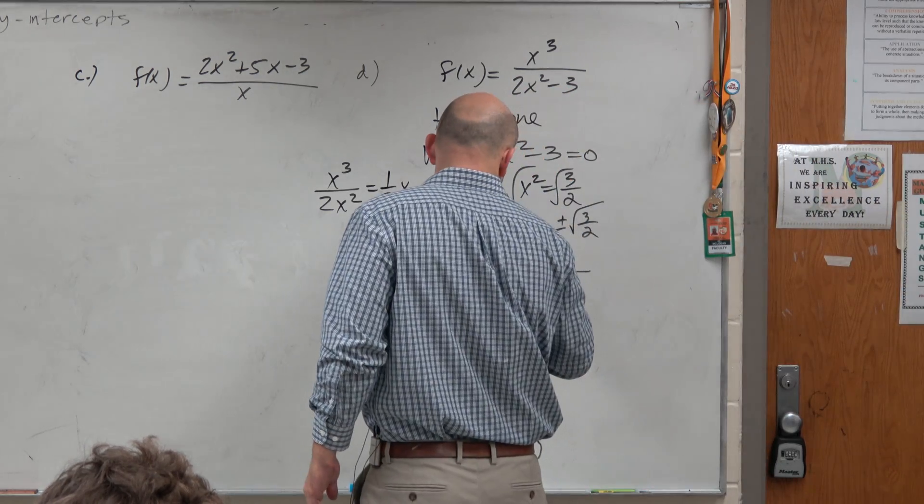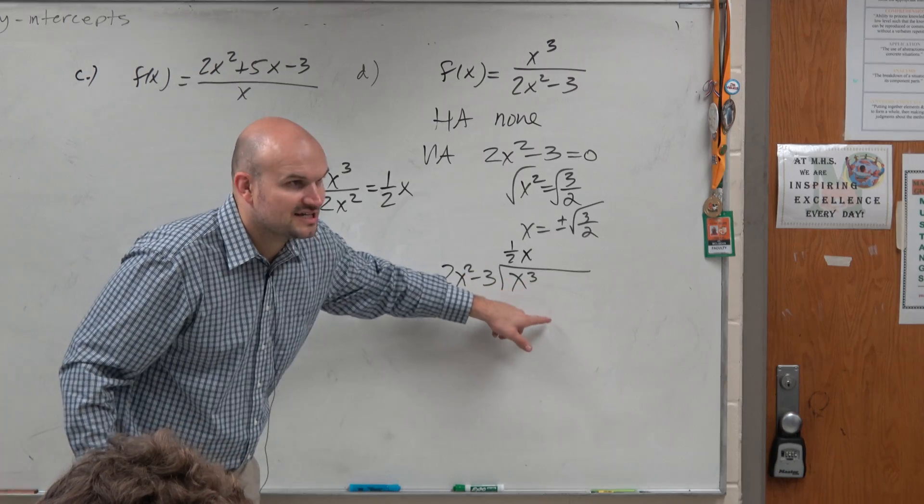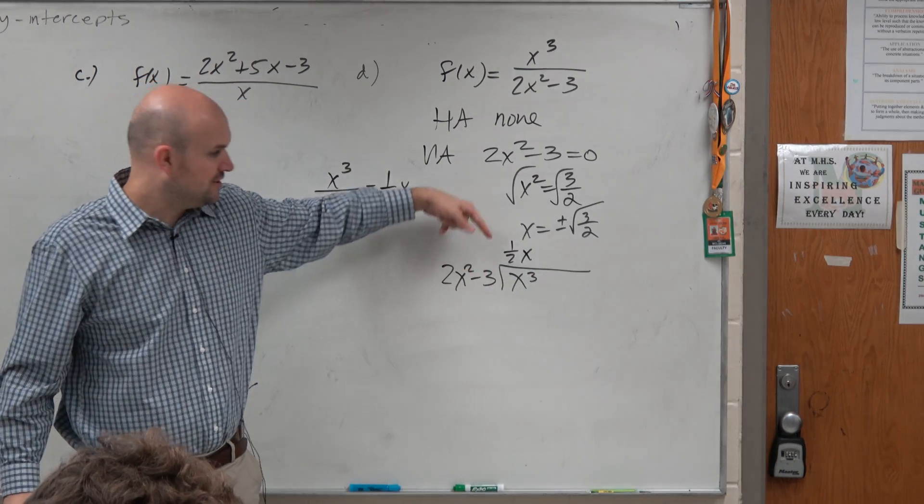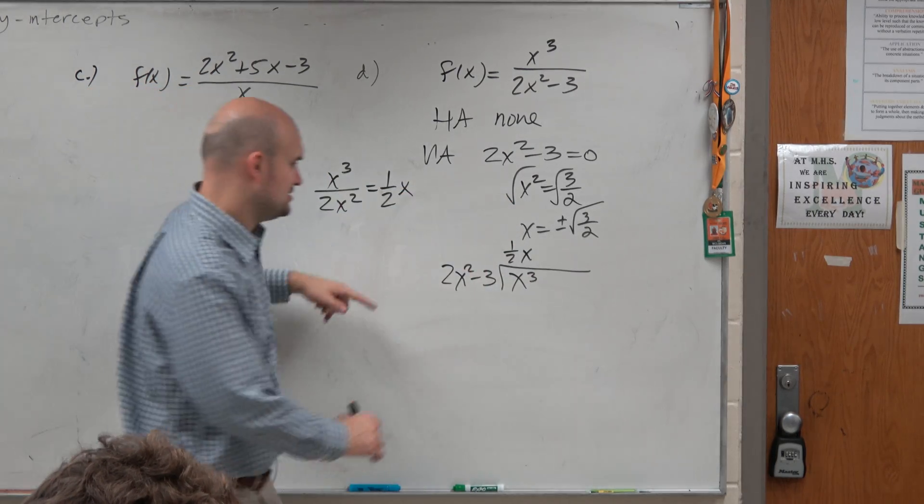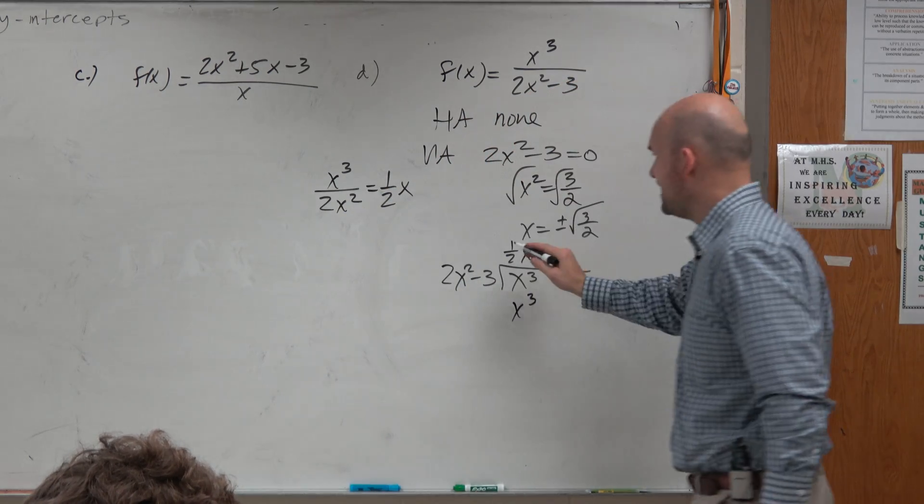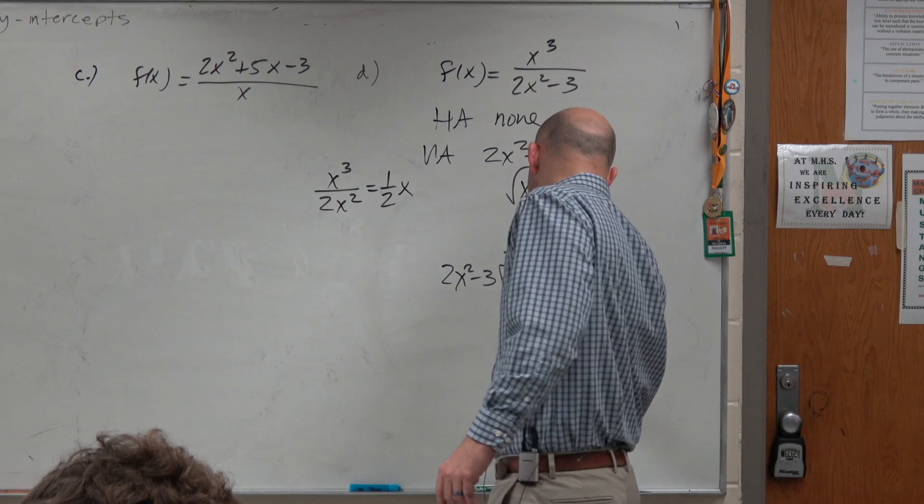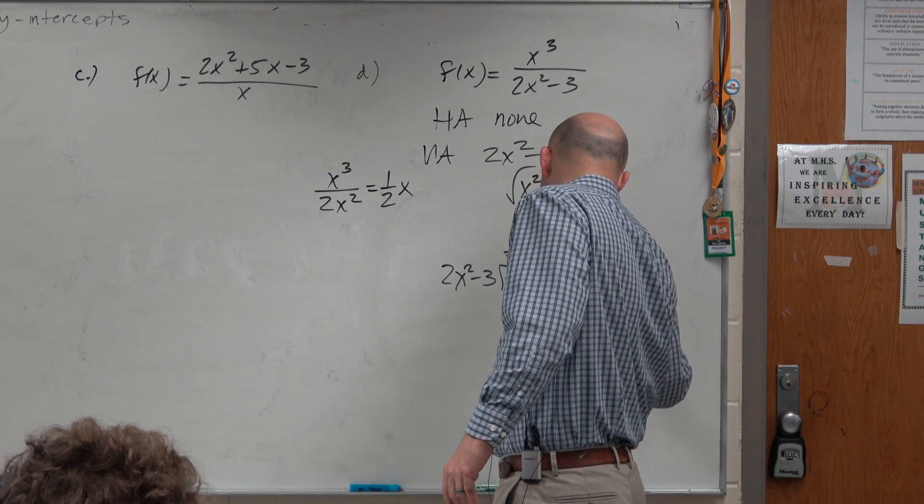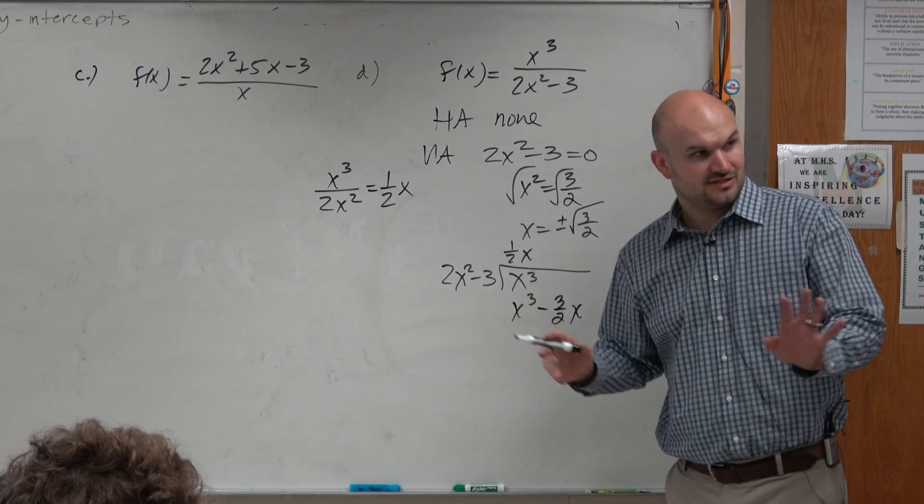So 2x squared divides into x cubed 1 half x times. 1 half x times 2x squared is just going to give me x cubed. 1 half x times negative 3 is a negative 3 halves x. Now here's the interesting part.